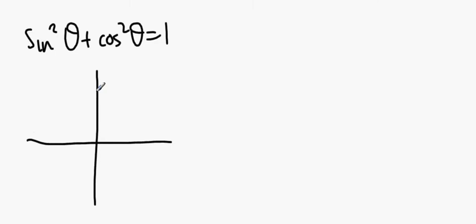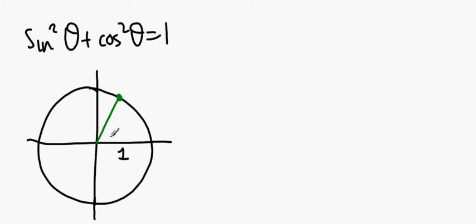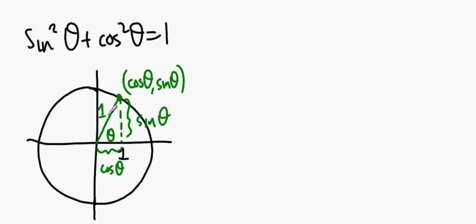You should also be aware. This is the biggest of the Pythagorean identities, and it comes from the fact that if I take the unit circle, the circle of radius 1 centered at the origin, and I take any point on the unit circle, that angle θ, this point is cosine θ and sine θ.